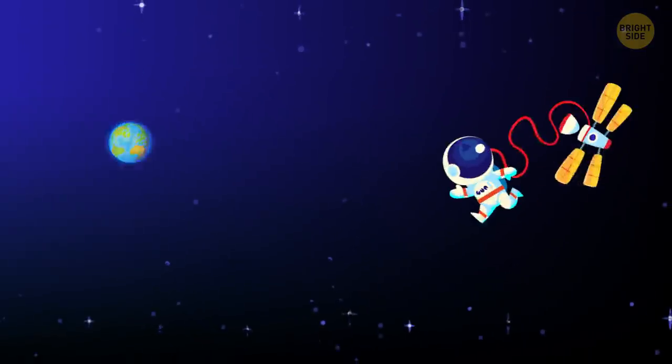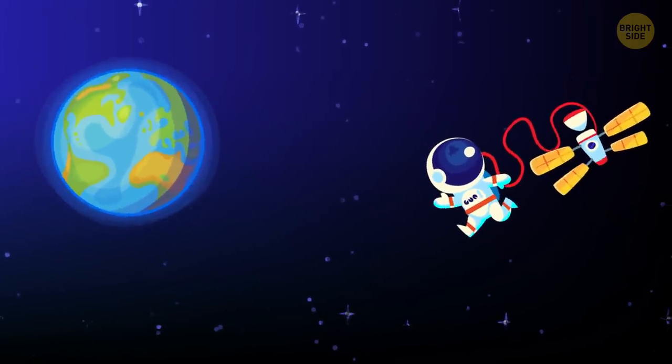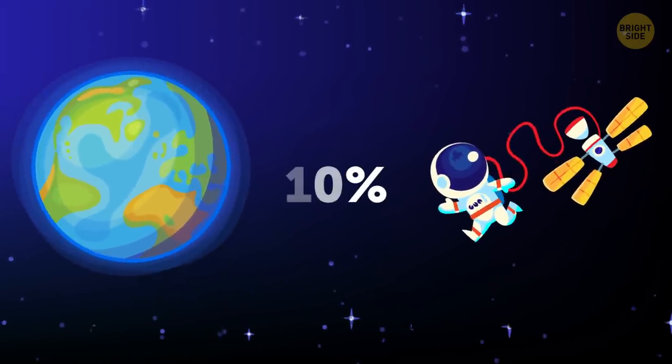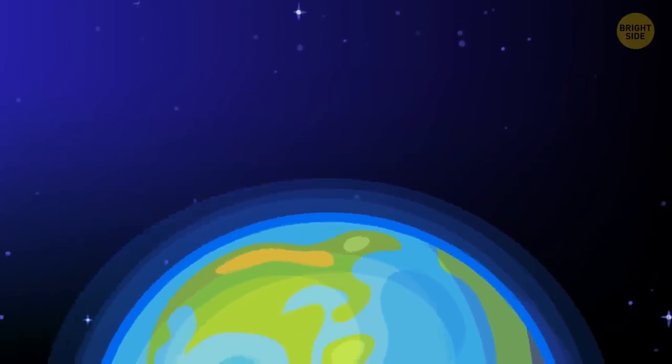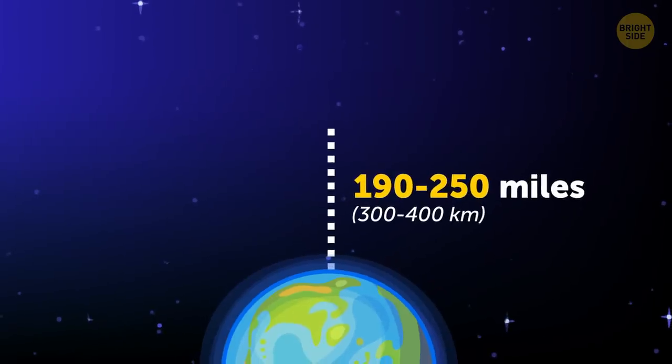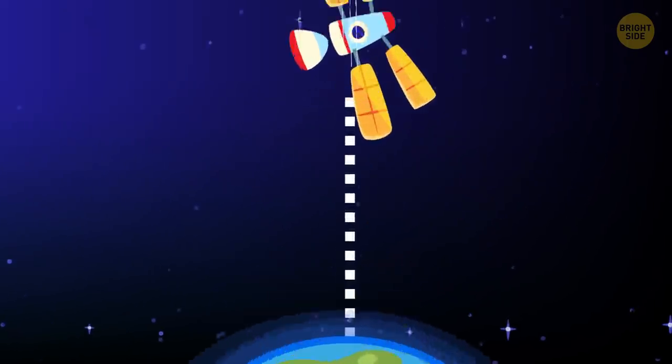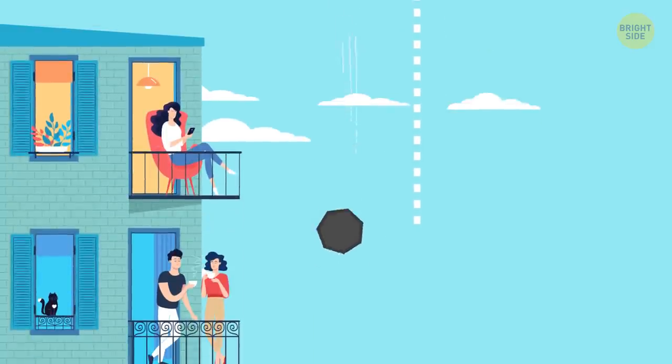As for astronauts and the ISS, the Earth's gravity is only 10% less in orbit than it is on the ground. If we build a platform 190 to 250 miles high and throw a stone from there, it will fall down just the same way it falls down from your balcony.